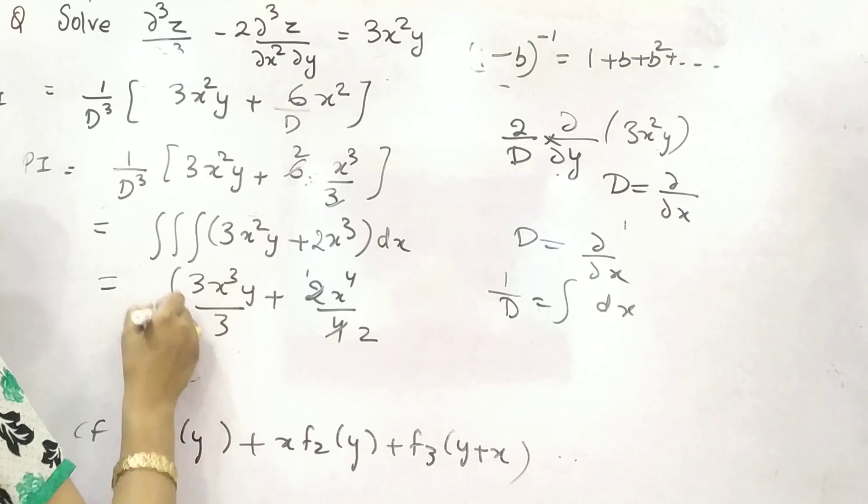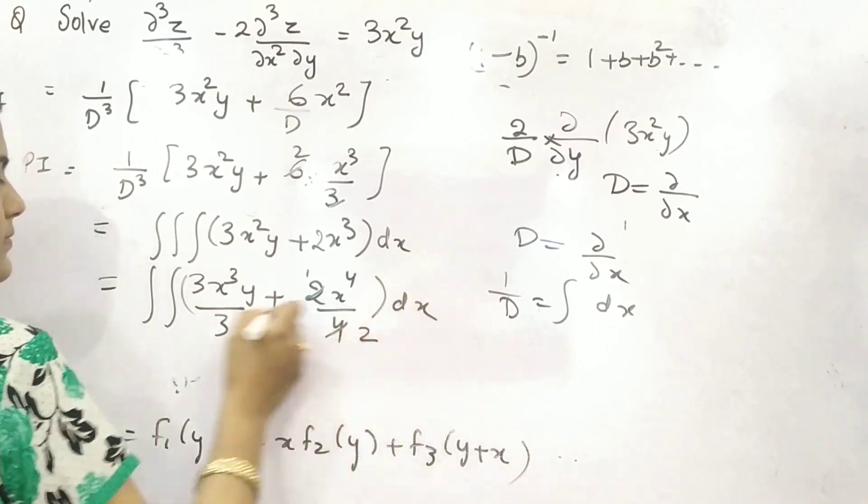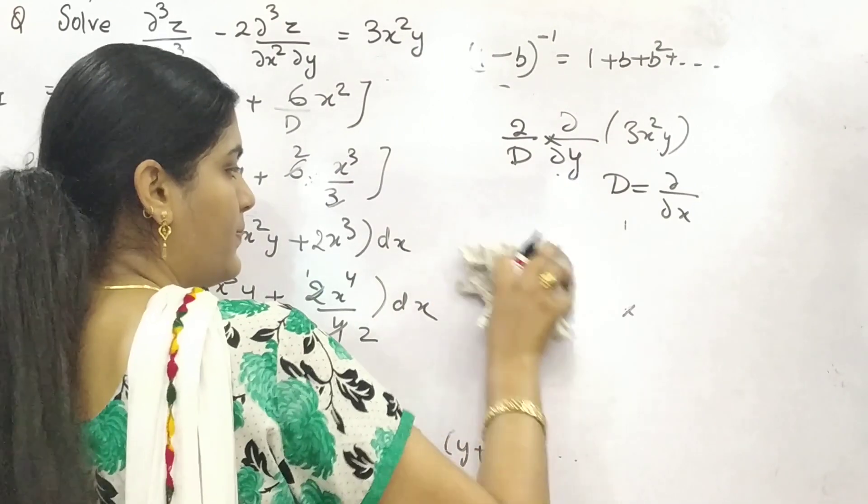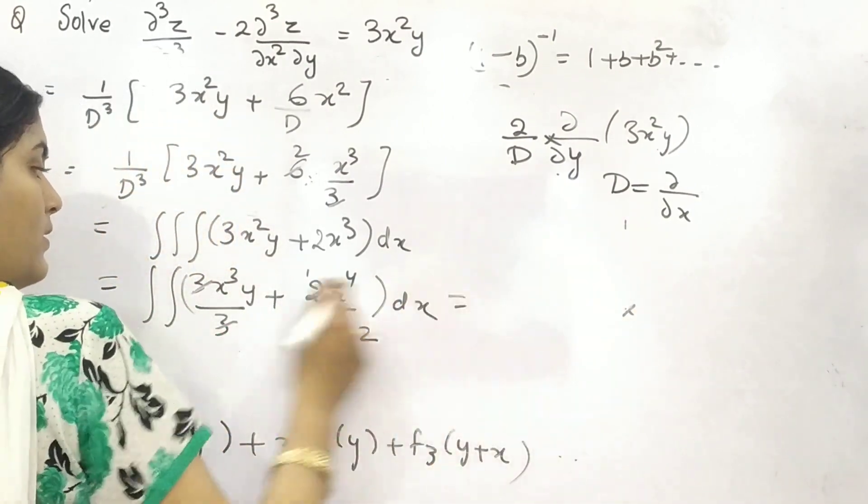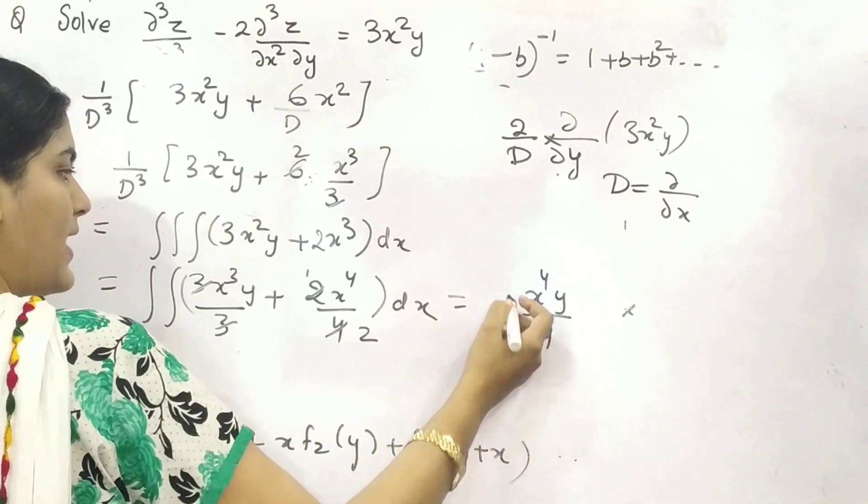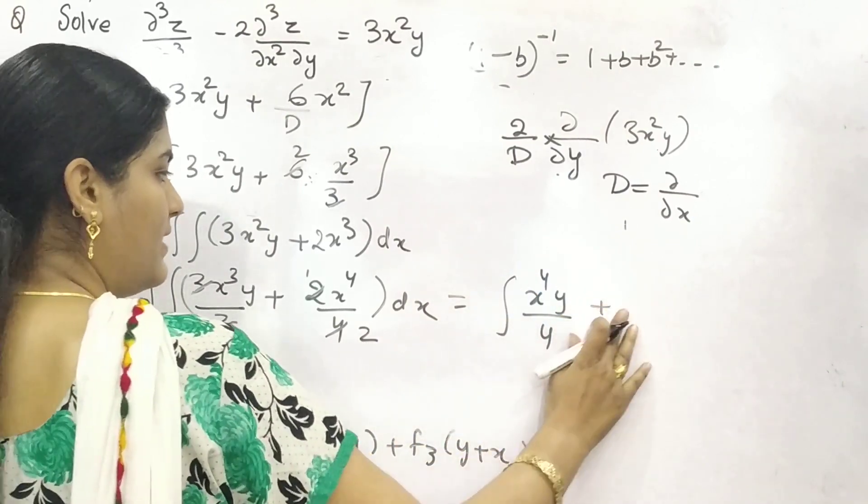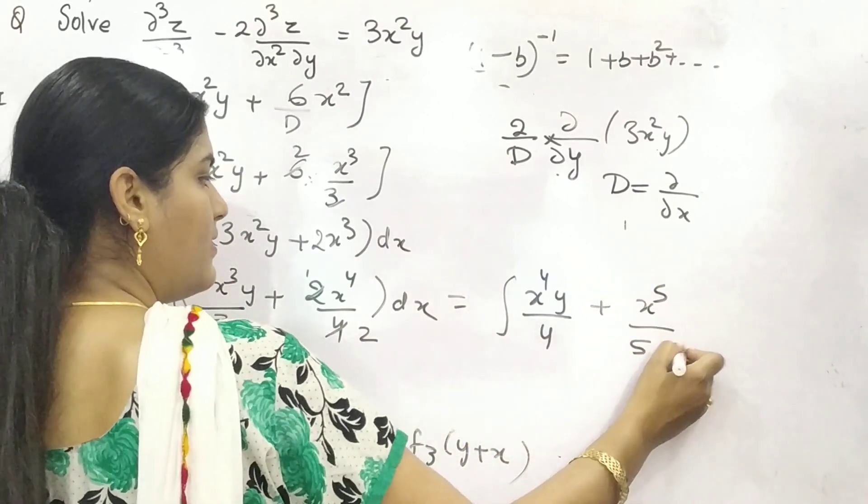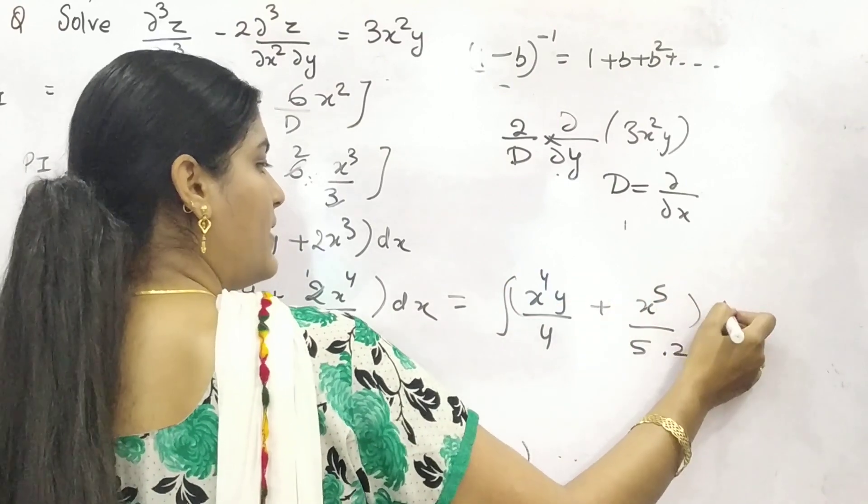Thereafter, 2 integrations are left. So, again, x⁴/4. 1 integration is left. x⁵/5. 2 is still there.